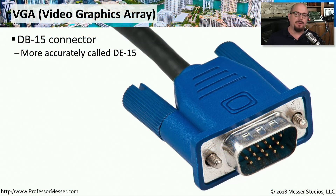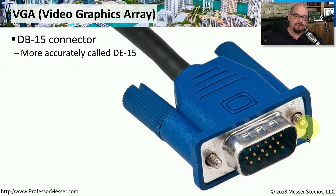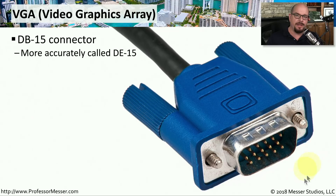A type of video connector that's been around a very long time is VGA, which stands for Video Graphics Array. You'll often see this described as a DB15 connection. The 15 means there are 15 pins inside this connector, and the DB refers to the outside connector type. This is actually a DE15 connection — the smaller D-type sub-miniature connection is the E size — and you may see it described as either DB15 or DE15 when looking for a VGA cable.